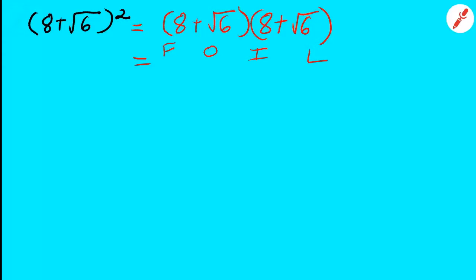I'll have 8 times 8, which is 64, plus 8 times the square root of 6, plus 8 times the square root of 6, plus the square root of 6 times the square root of 6 — which is the square root of 6 squared.